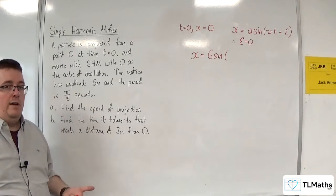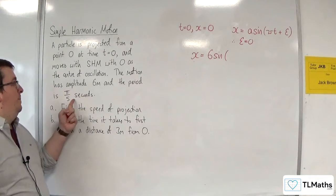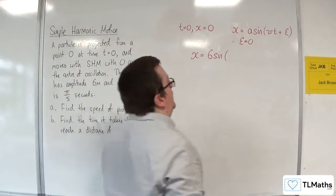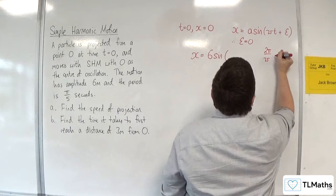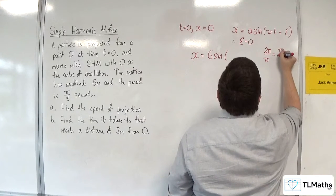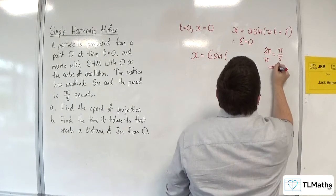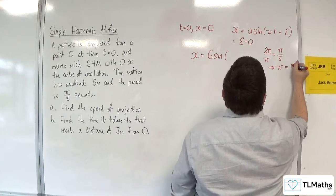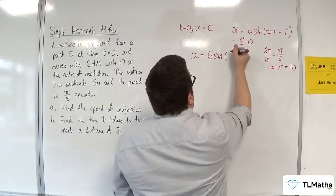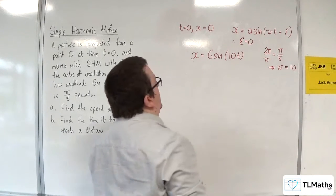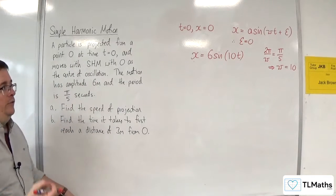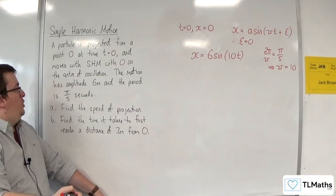But can we work out omega? We know that the period is π over 5 seconds, we know that the period has to be 2π over omega, and if that's equal to π over 5, then that implies that omega has to be 10. So we have 6 sine of 10t, and this is the solution to the differential equation.